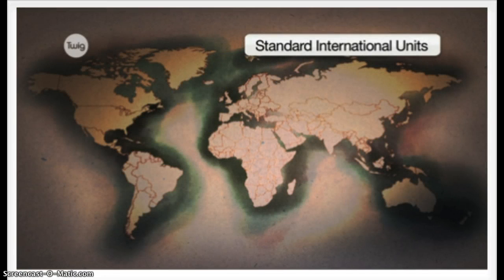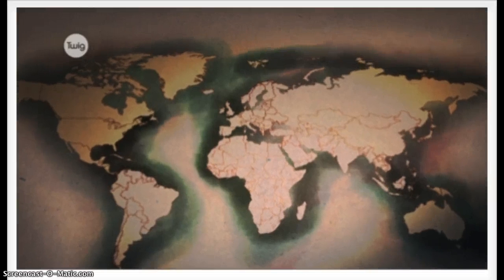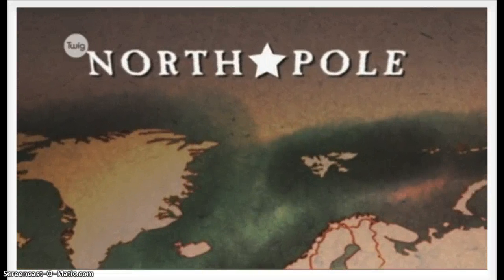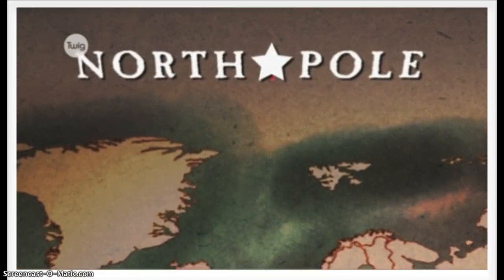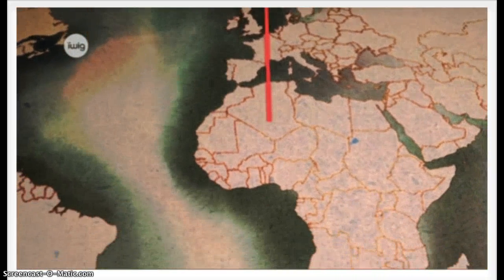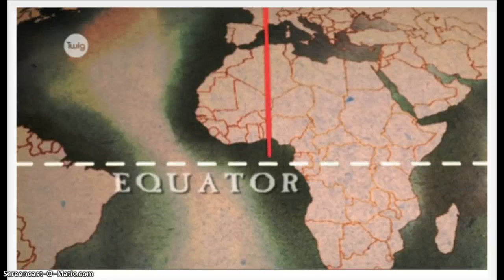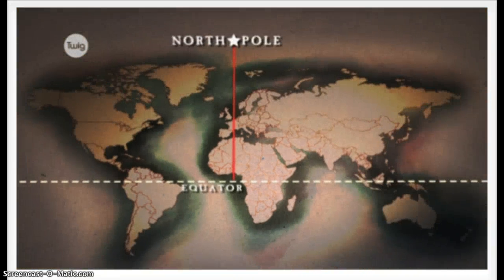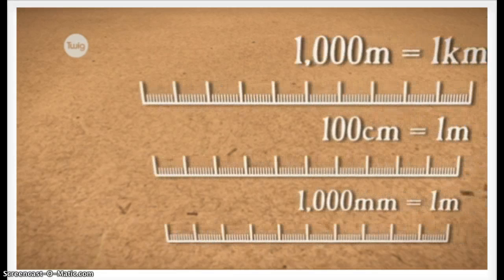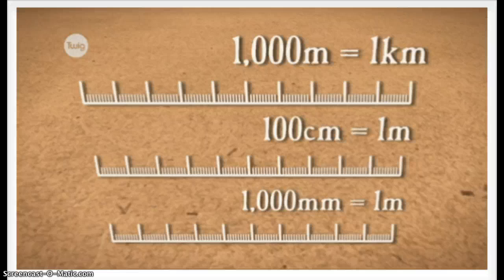It was decided that the meter should be a length that was the same the whole world over. A meter would be one ten-millionth of the distance from the North Pole to the equator. This was calculated using trigonometry, and an official meter bar was created in Paris in 1795. Using the decimal system, other lengths could be calculated simply from the new meter.